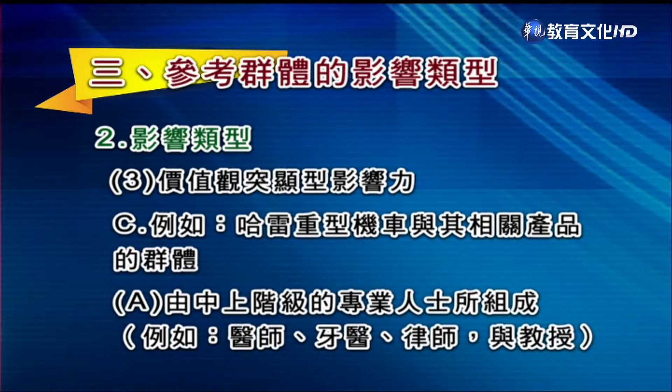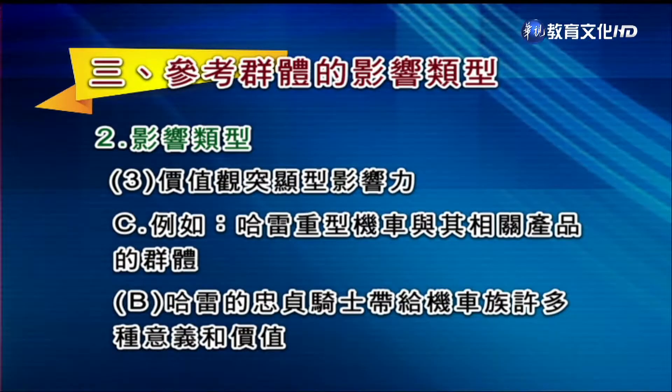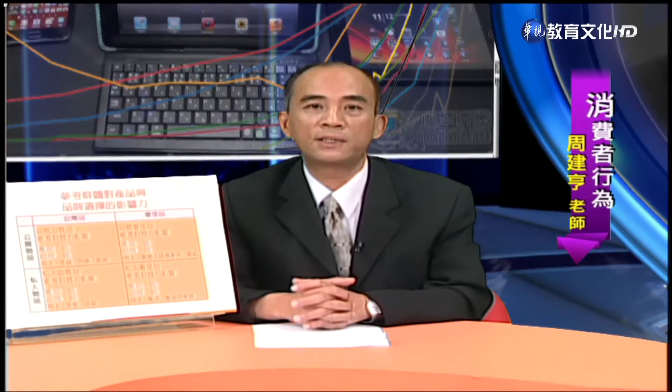哈雷机车的组成分子通常是由中上阶级的专业人士所组成，包括医师、牙医、律师跟教授，这跟一般人的概念不一样。这些专业人士工作非常忙、收入非常高。研究发现，哈雷的忠贞骑士会带给其他族群很多的意义与价值。对非机车族来说可能是负面意义，因为很多人认为骑哈雷机车的人都是嬉皮。